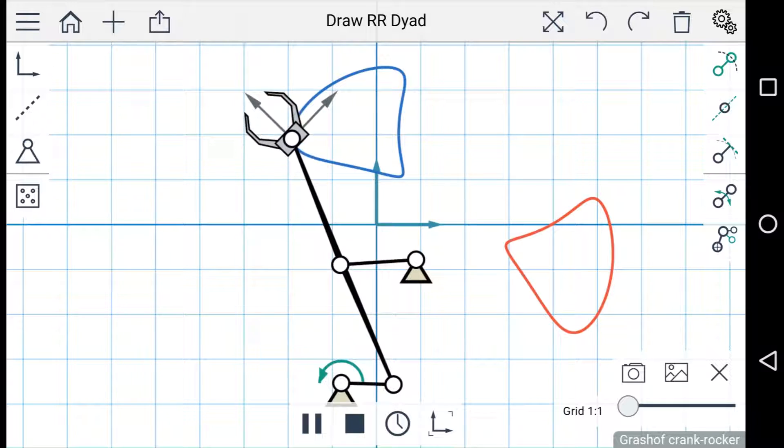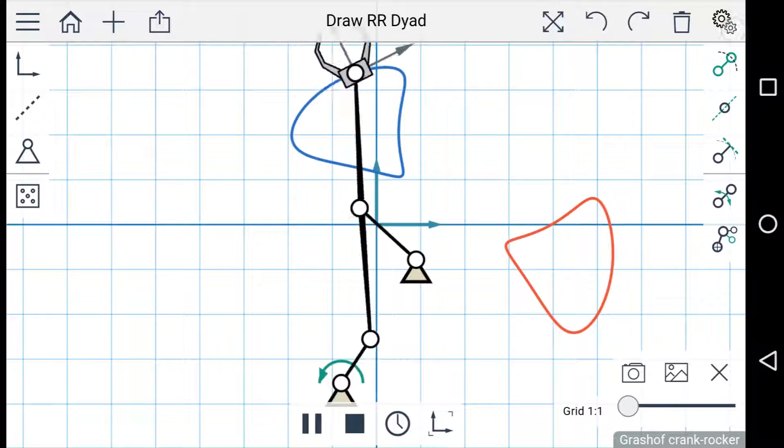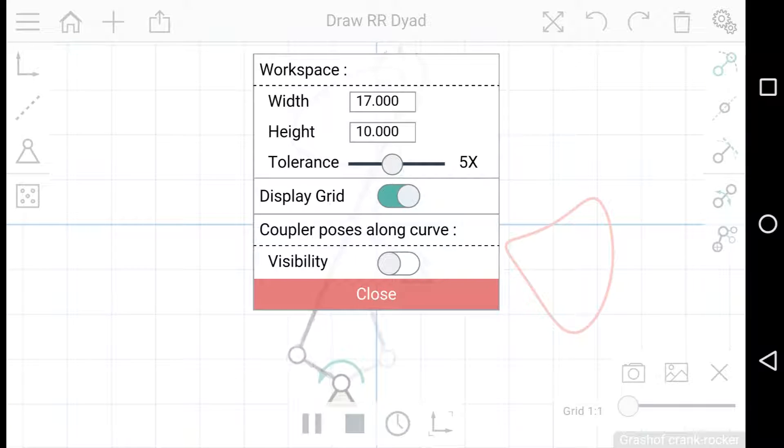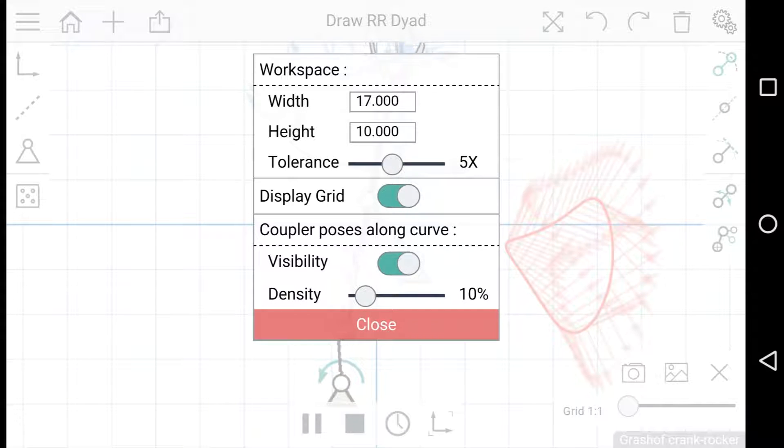Finally, there's an option in the settings menu in the top right corner. And this setting here shows you the coupler positions at various points along the curve.